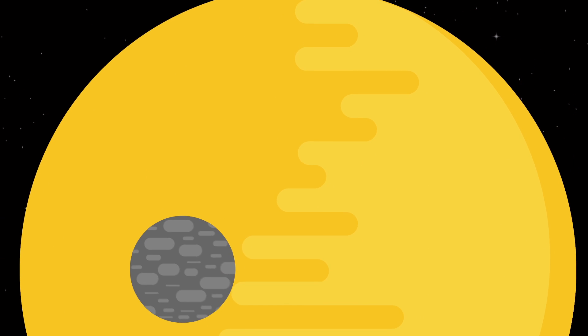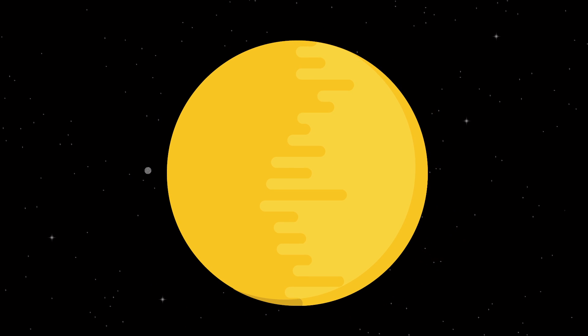During a transit, we see Mercury as a tiny black dot, steadily crossing the face of the Sun over several hours.